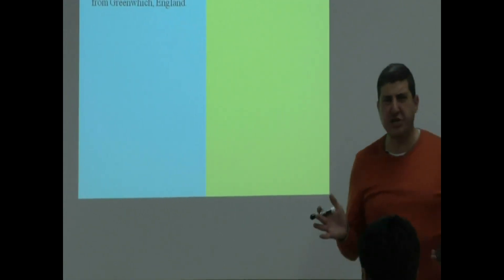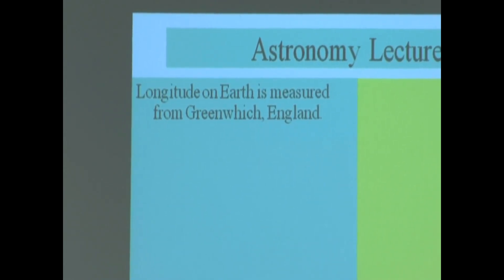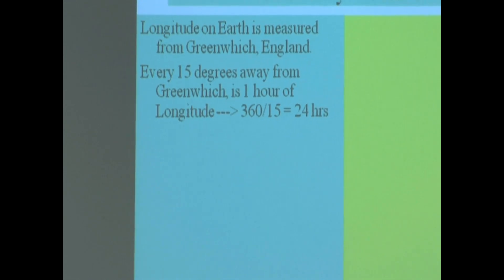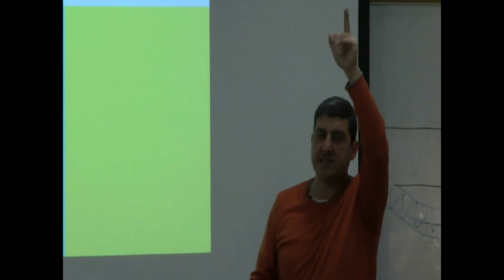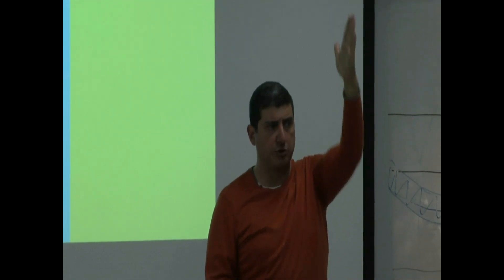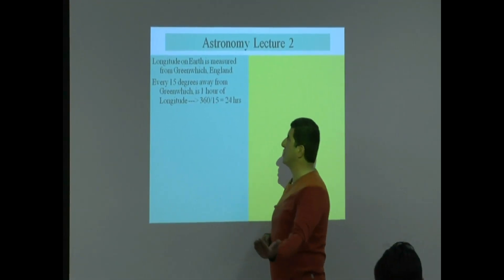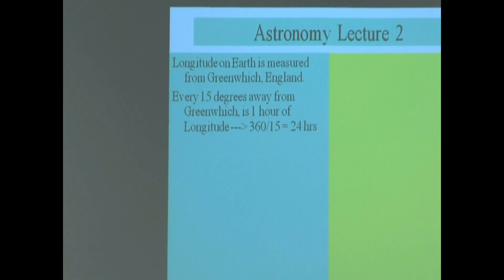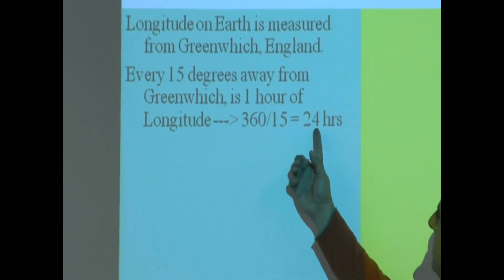To understand and appreciate RA, it's helpful to understand how longitude works on Earth. I'll do a quick review of longitude. On Earth, you have to decide where to call zero longitude. The whole circle has 360 degrees, and we want 24 hours in that — so 360 divided by 15 degrees equals 24 hours. Every 15 degrees from Greenwich, England is one hour of longitude.